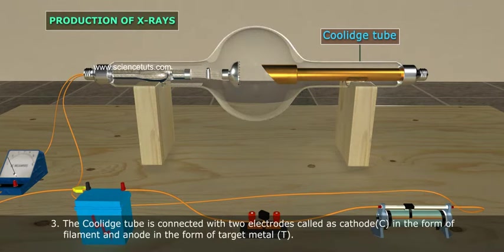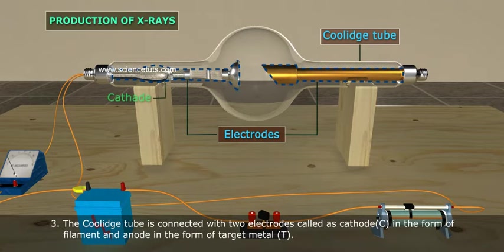The Coolidge tube is connected with two electrodes called cathode C in the form of filament, and anode in the form of target metal T.